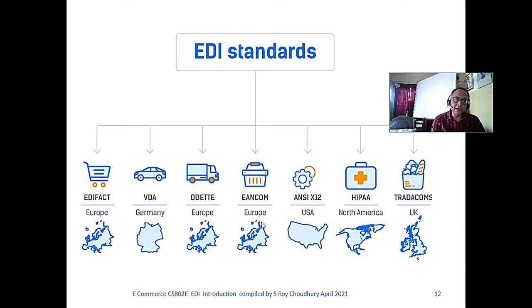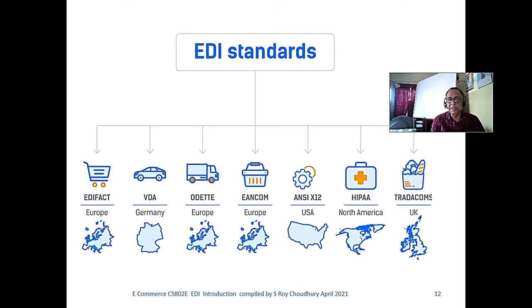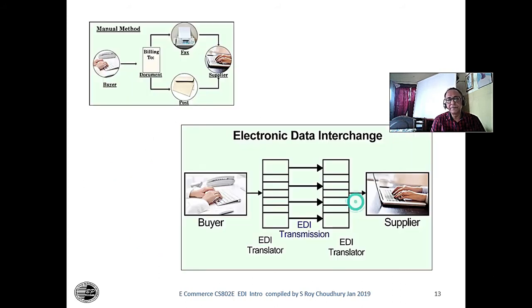India has followed the EDIFACT standard from 1990 onwards. There are several formats — more or less they are equivalent, and the Value Added Network is authorized to convert between them. That is their service, like AT&T and VSNL provided. EDIFACT messages are all layer 7 protocol, and they can use any data layer underneath.